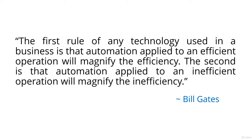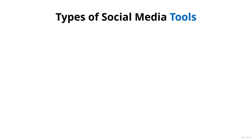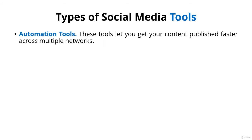These tools can make light work of your social media efforts by using automation, and you can get better results with analytics. So in this section we're going to talk about the following types of tools. First, automation tools — these let you get your content published faster across multiple networks.